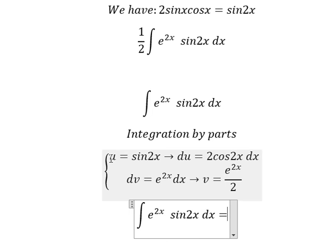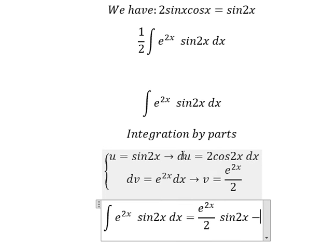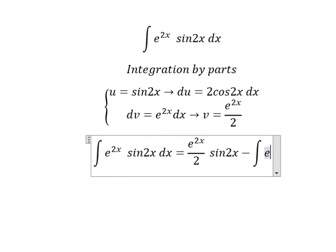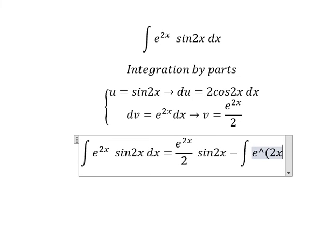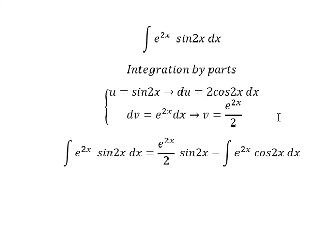So we have u multiplied by v minus du multiplied by v. We have 2 divided by 2, so you get the integral e^(2x)cos(2x)dx.